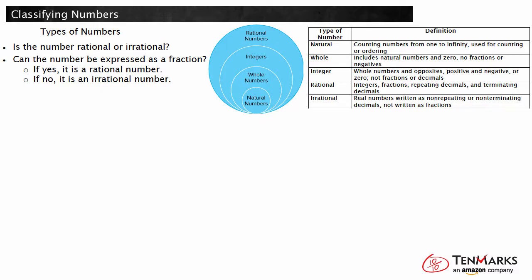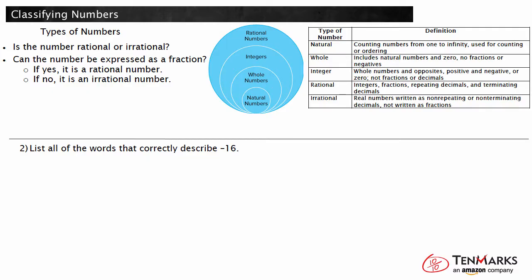Let's look at another example. List all of the words that correctly describe negative 16. We need to determine all the classification words that can be used to describe negative 16. We start with deciding if the number is rational or irrational, since all numbers fit into one of those categories. A rational number can be expressed as a fraction, and the decimal form will terminate or repeat. Irrational numbers cannot be expressed as a fraction, and the decimal will not terminate or repeat. Negative 16 is a negative number. It can be made into a fraction by writing it over one, so it is a rational number.